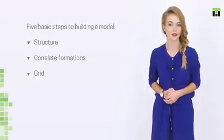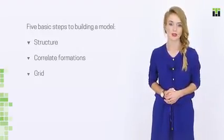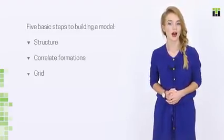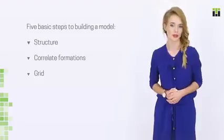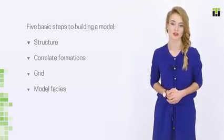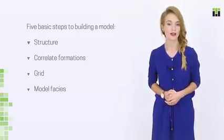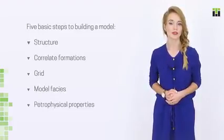Then, you build a grid. First, you decide how many cells will be in your model, how large they are going to be and how they will be arranged. After that, your model facies areas with similar properties distribution.